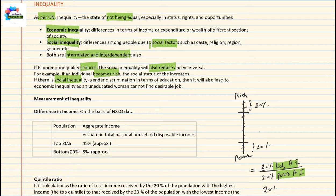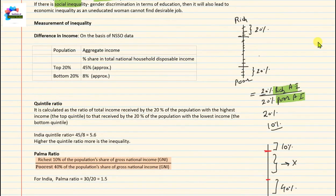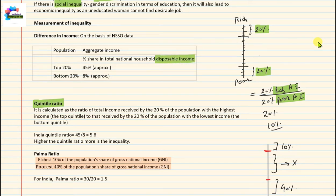Therefore, both social inequality and economic inequality are interrelated and interdependent. In economics, we are more concerned with economic inequality rather than social inequality. So we will study how to measure economic inequality in an economy. The first method is the quintile ratio. Quintile means 20%, just as decile means 10%.